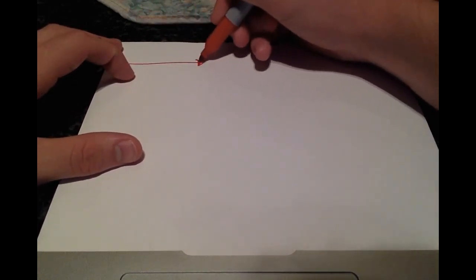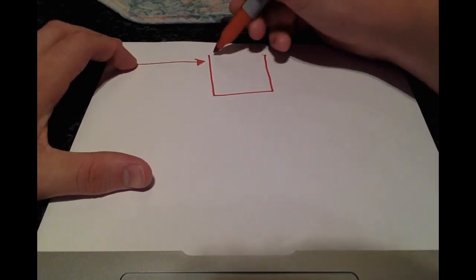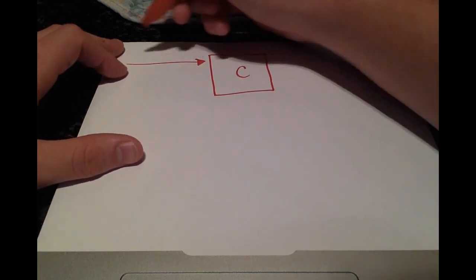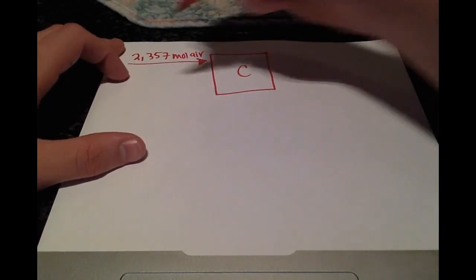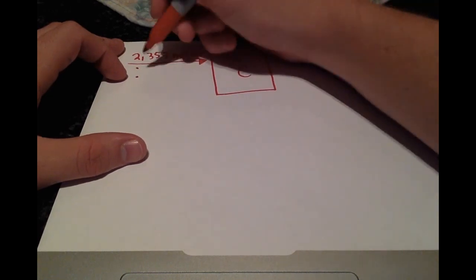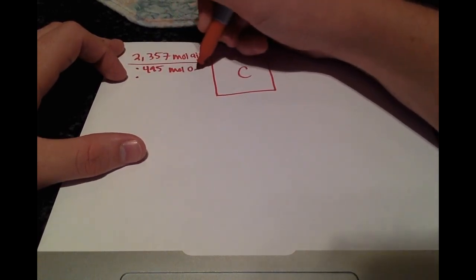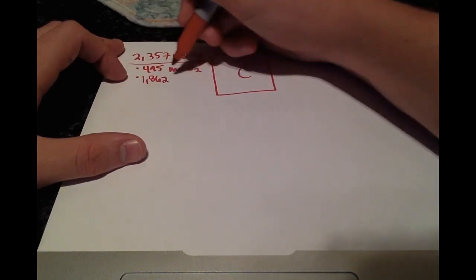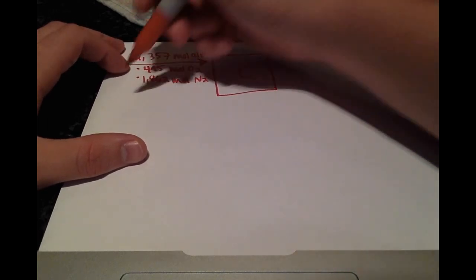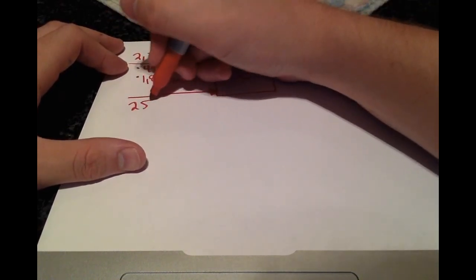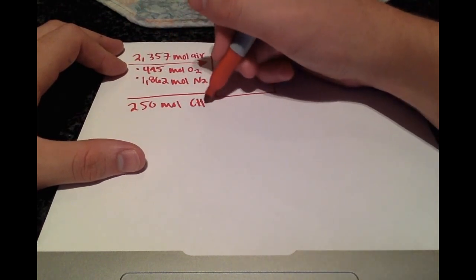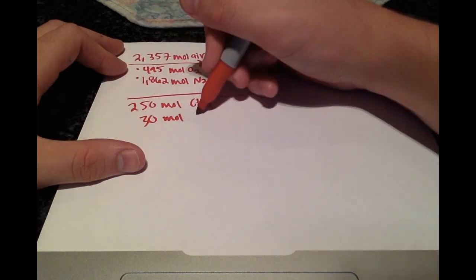On a fresh sheet of paper let's write all the information that we now have. Going into our combustion chamber we have 2,357 moles of air. To break that down into its components that's 495 moles of O2 and 1,862 moles of N2. We also have our original gas stream going in which was 250 moles of CH4, 30 moles of carbon monoxide and 20 moles of O2.